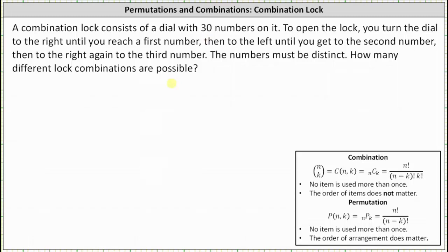Remember, for a permutation, no item is used more than once and the order of the arrangement does matter. So one way to answer this question would be to determine 30 permute 3, or the permutation of 30 items selected three at a time.